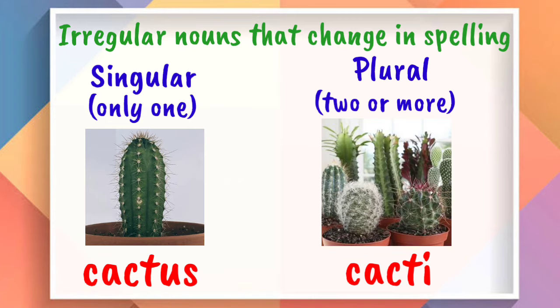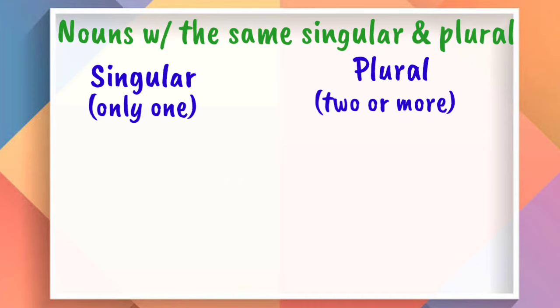Now, let us have some examples of nouns that have the same spelling as their singular form. First one. Sheep. The plural form is also sheep.